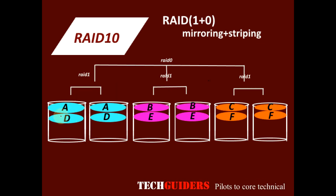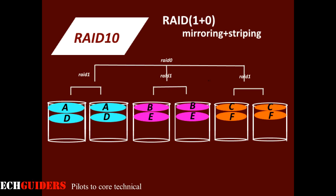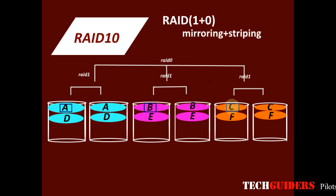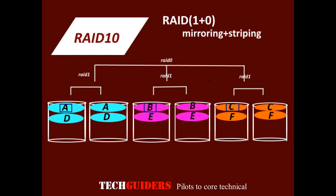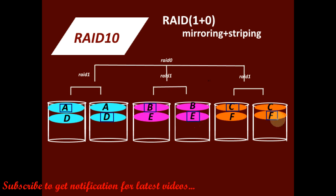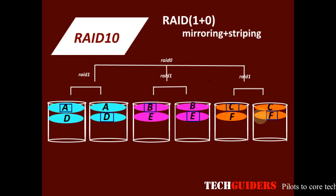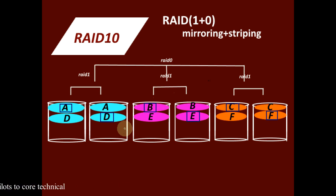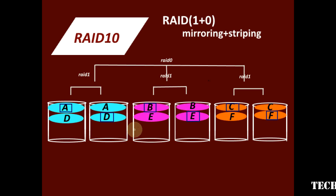With mirroring and striping, disk 1 can service the request for block A, and in parallel disk 3 can service the request for block B, disk 5 for block C, disk 2 for block D, disk 4 for block E, and disk 6 for block F. Thus, everything can be executed in parallel, and multiple requests can be serviced simultaneously. This level shows good performance for random requests at different portions of the logical disk, resulting in improved read performance.